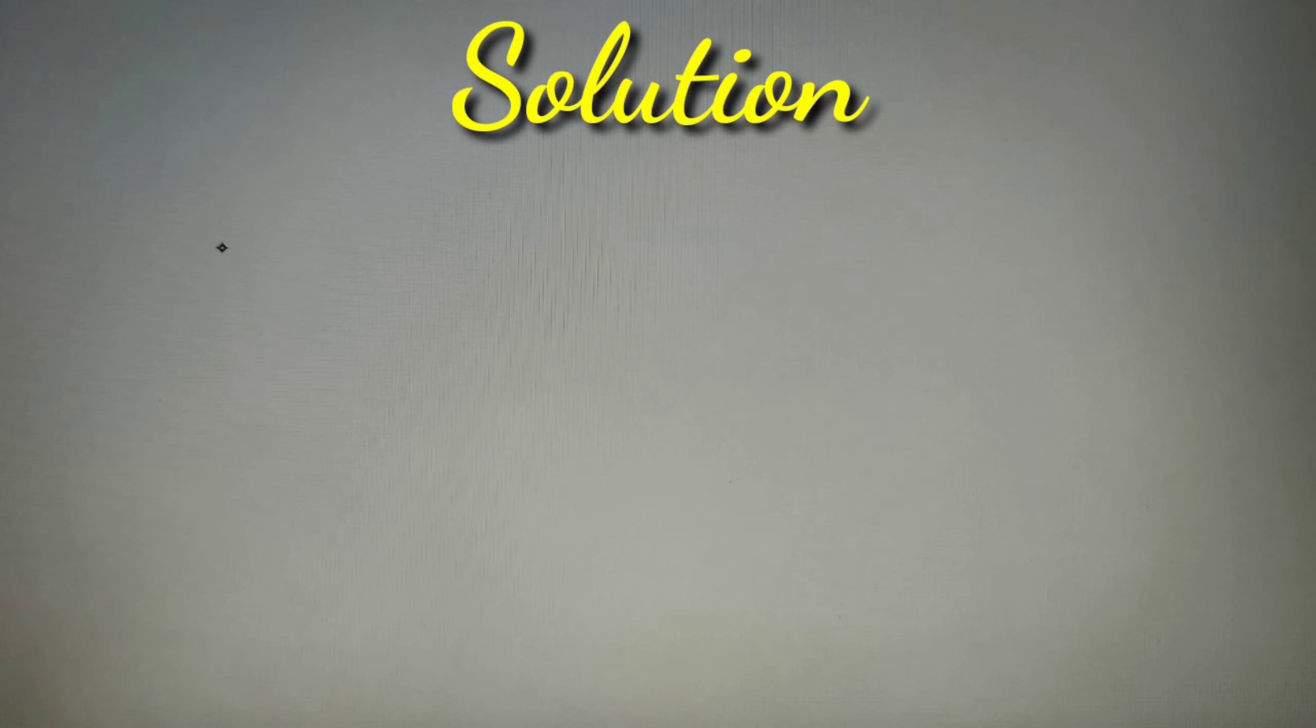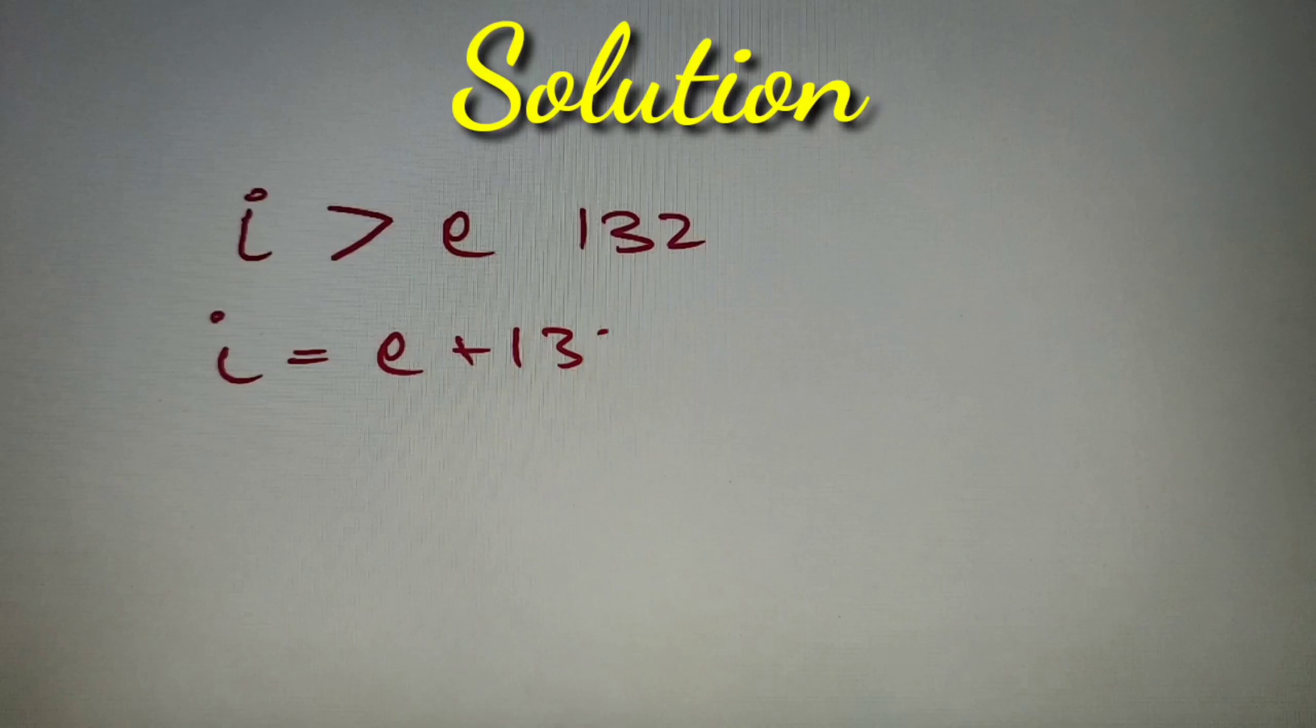I hope that you've tried the question and if you've written then let's check the solution. So according to the given question, we are given a regular polygon such that the interior angle exceeds its exterior angle by 132 degrees. So if we form an equation, we get that i = e + 132, where i is the interior angle and e is the exterior angle of the regular polygon.